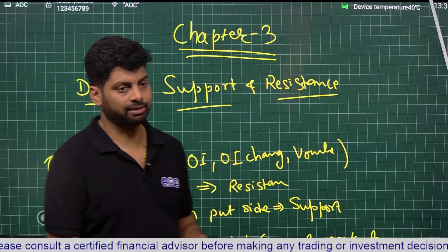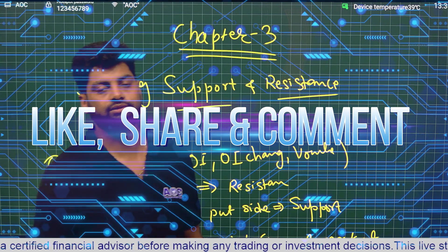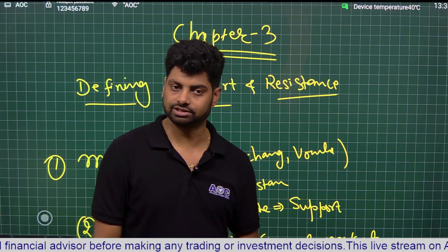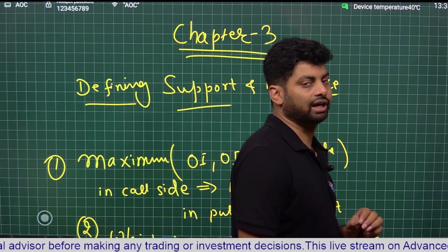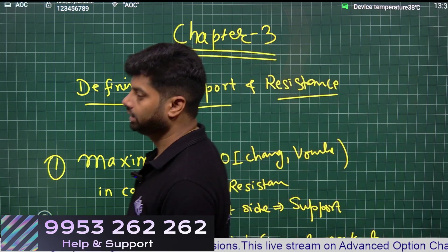In the previous chapter we learned that OI change, OI and volume are responsible for making support or resistance. Now how can we identify where is our support, where is our resistance.